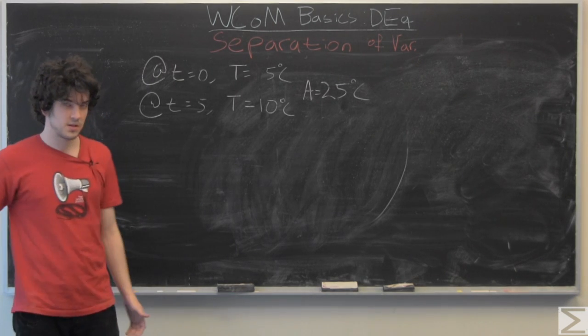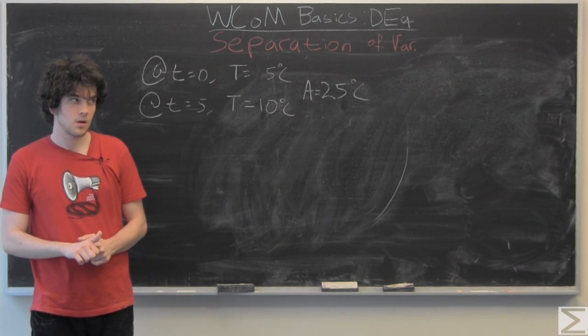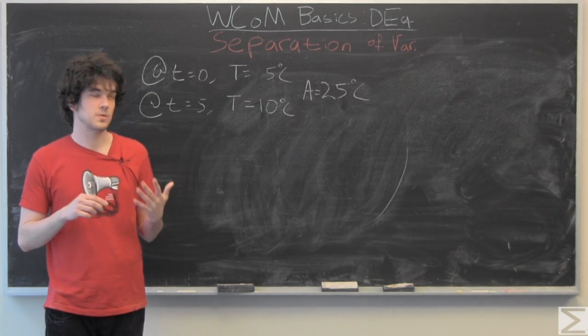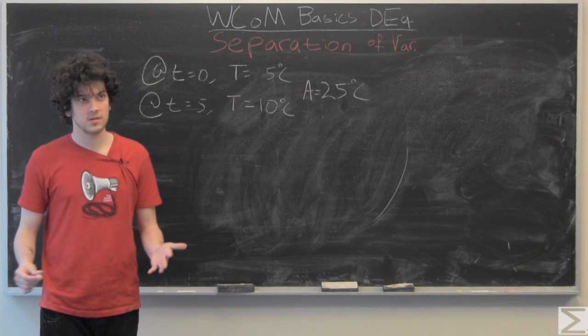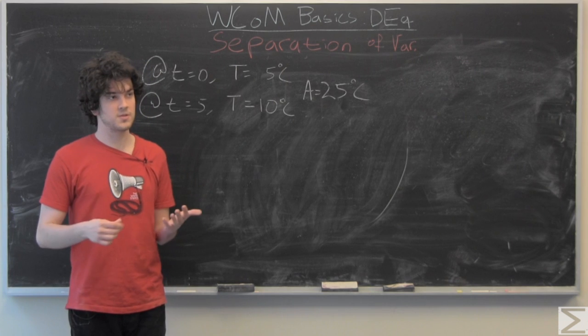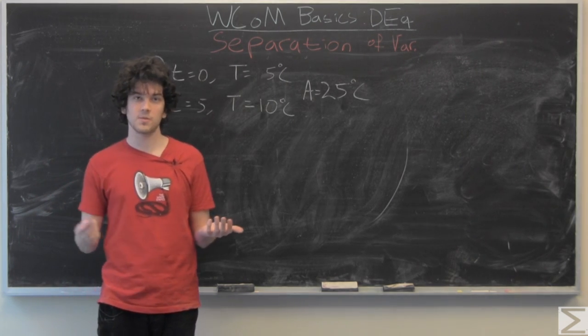So we're just going to set up our Newton's law equation which if you can't remember, T as a function of time is equal to C e to the KT plus A. You can always just derive it with intuition saying that the derivative, the rate of change of temperature is proportional to the differences of temperature and atmosphere.